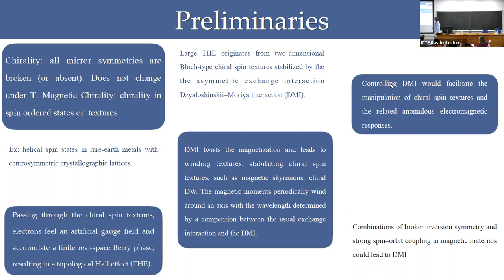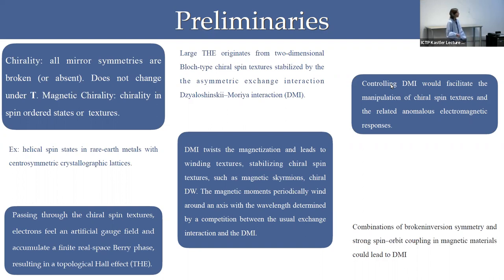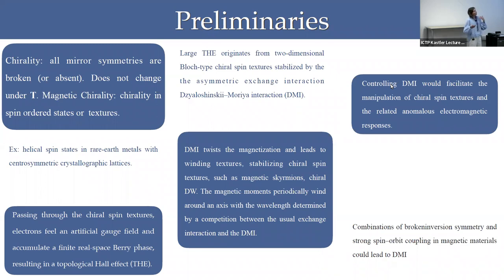I will start with some preliminaries. Just to remind you: a Rashba system is such that all the mirror symmetries are broken or absent, and that fact doesn't change in the case that you have time reversal. When you have a magnetic Rashba system, that means that the magnetic degrees of freedom of your system are here.